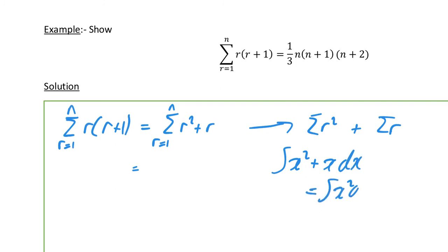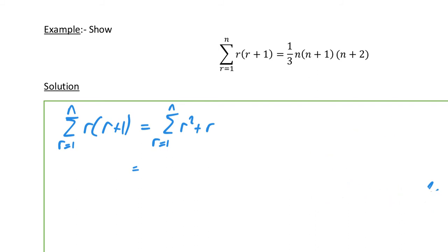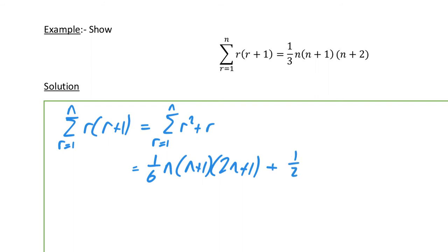We can split that as sigma of r² plus sigma of r — much like integration where the integral of (x²+x)dx splits into two integrals. Applying the standard results: sigma of r² from 1 to n is (1/6)·n(n+1)(2n+1), and sigma of r is (1/2)·n(n+1).